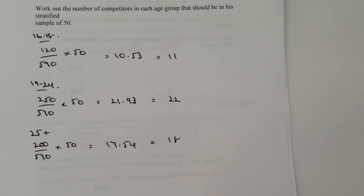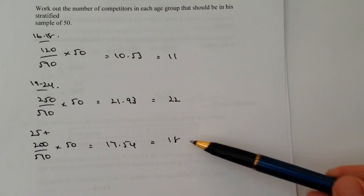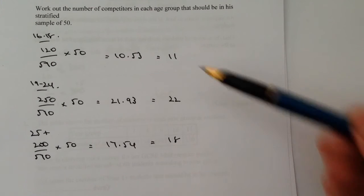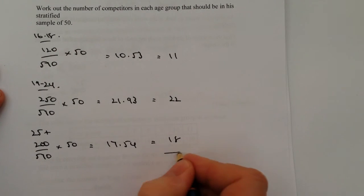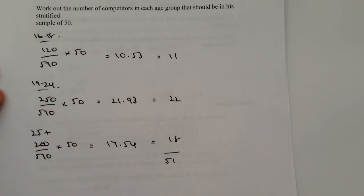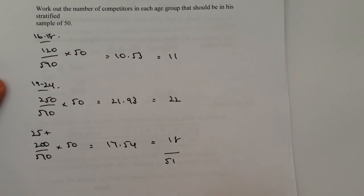We've only got 50 competitors in the sample group, and if you spot that 18 plus 22 plus 11 is actually 51, we need to reduce one of these categories by one. It doesn't matter which one particularly. I'm going to reduce the final one, so the 16 to 18 age group I'll leave as 11, 19 to 24 I'll leave as 22, but the last group I'm going to reduce now down to 17 rather than the 18 I calculated.